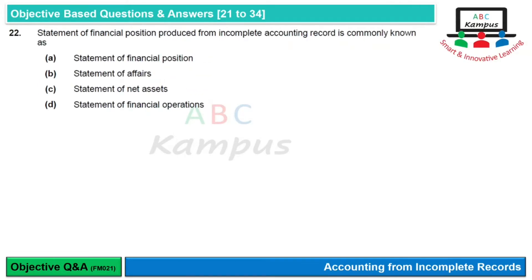Question 22: Statement of financial position produced from incomplete accounting record is commonly known as? जो assets और liabilities की estimated amounts की base पर एक statement of financial position बनाई जाती है, assets और liabilities को list किया जाता है, और as a balancing figure capital या equity को find out कर लिया जाता है — उसे Statement of Affairs कहते हैं। So option B would be correct।